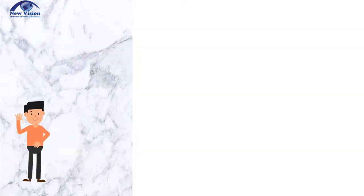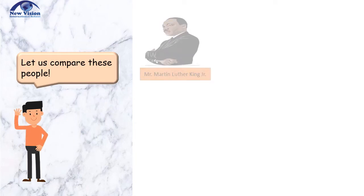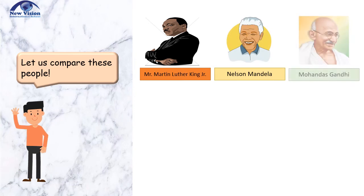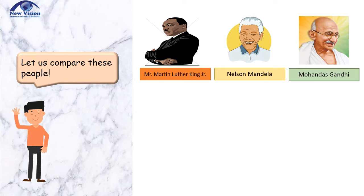But before we dive into our selection, let us compare these people first. We have Mr. Martin Luther King Jr., Nelson Mandela, and Mohandas Gandhi. These three men lived highly visible lives, speaking and traveling widely to promote their causes, gathering followers and some enemies as well, wherever they went.